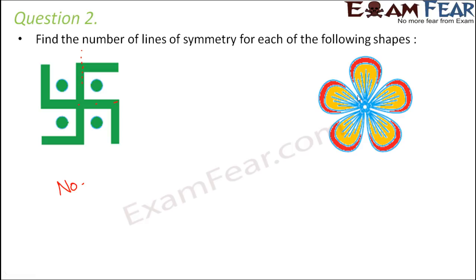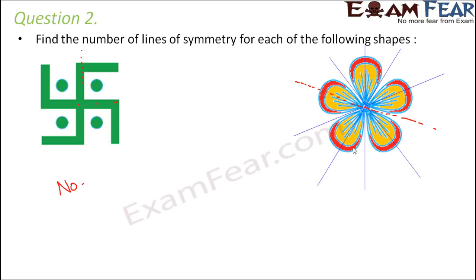The next image is a flower with five petals. Any line passing through the midpoint of one petal and through the center of the opposite two petals divides the flower into two and a half petals on each side — two equal halves. Since the flower has five equal petals, we can draw one such line for each petal, giving a total of five lines of symmetry.